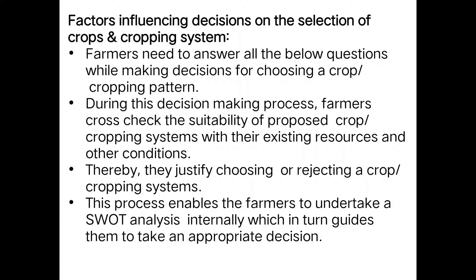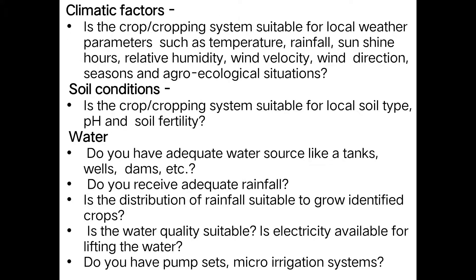The next important factor affecting selection of crops or cropping system includes climatic factors. The crop or cropping system should be suitable for local weather parameters such as temperature, rainfall, sunshine hours, relative humidity, wind velocity, wind direction, season, and the agro-ecological situations.